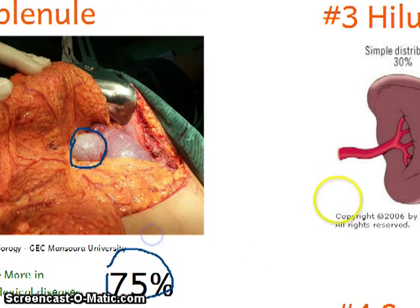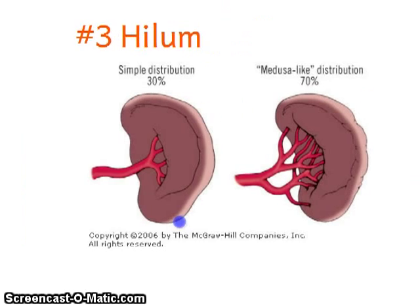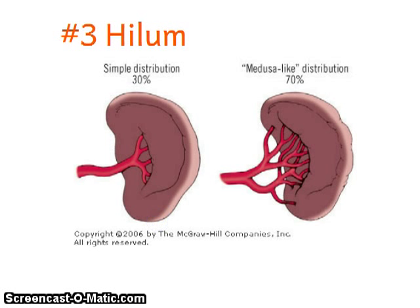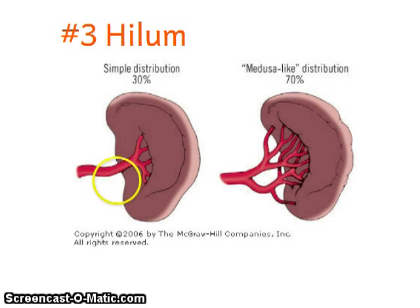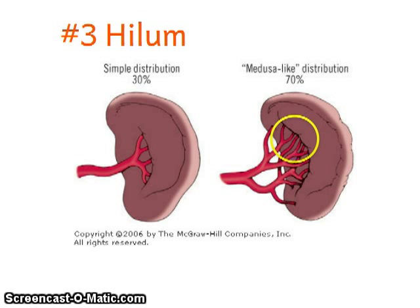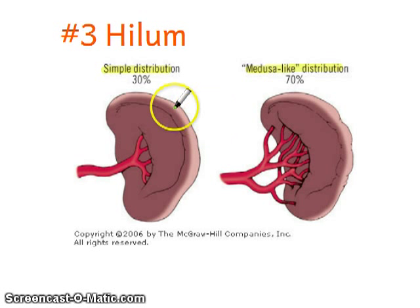The third topic is the hilum of the spleen. The hilum is a really important structure because when you are performing a splenectomy, you should ligate the splenic vessels in the hilum. You should know that there are two types of splenic hilum distributions: the simple distribution and the medusa-like distribution.